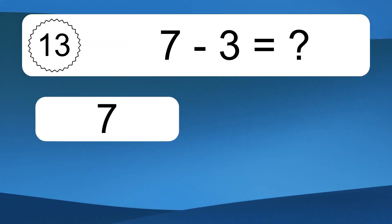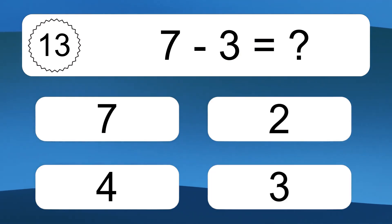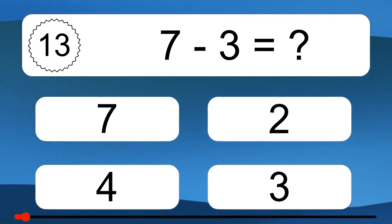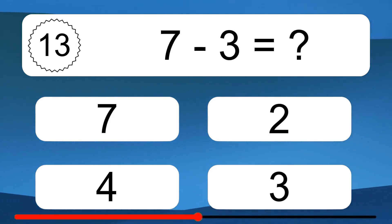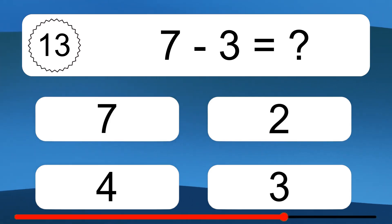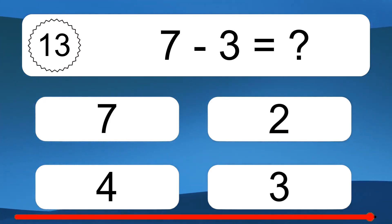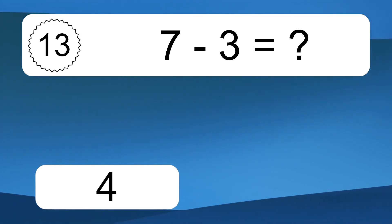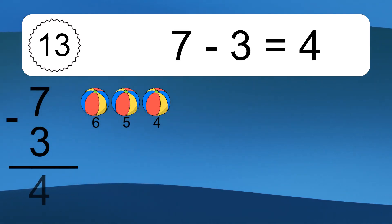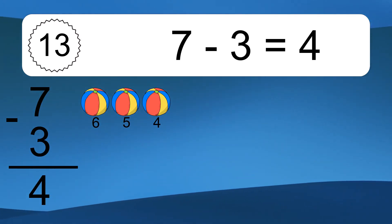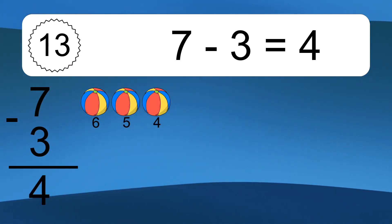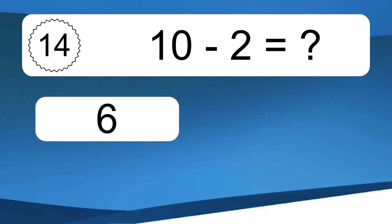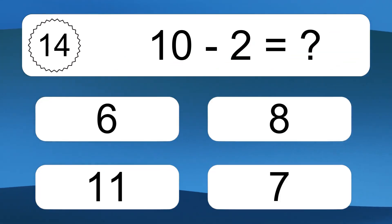7 minus 3 equals what? 7 minus 3 equals 4. Let's count it: 6, 5, 4.